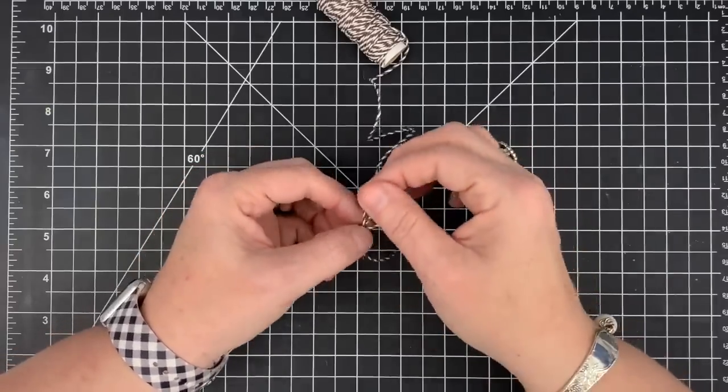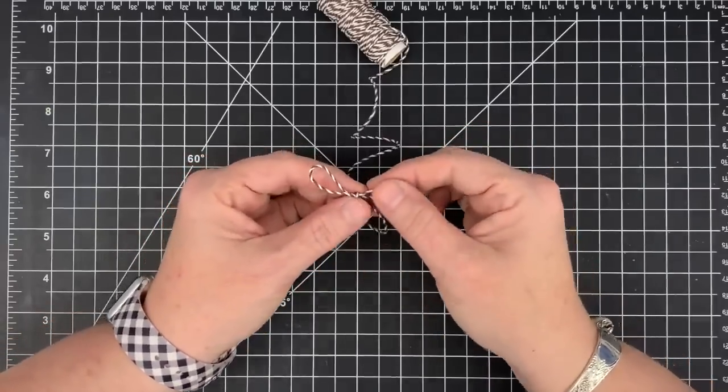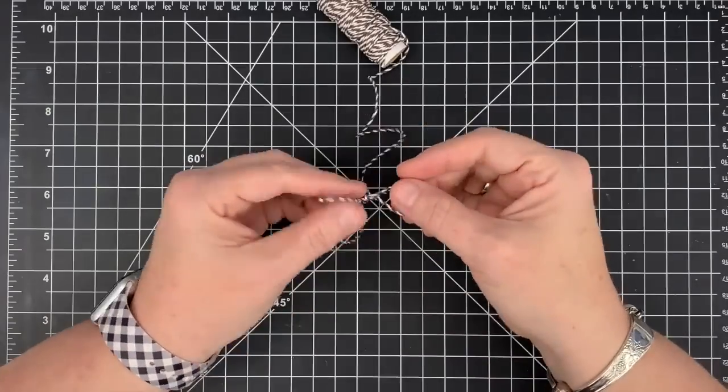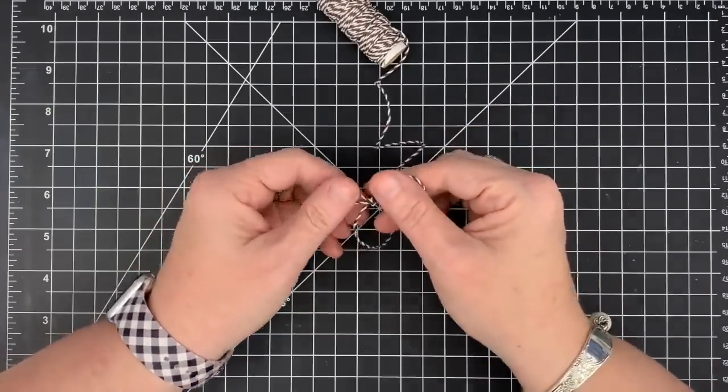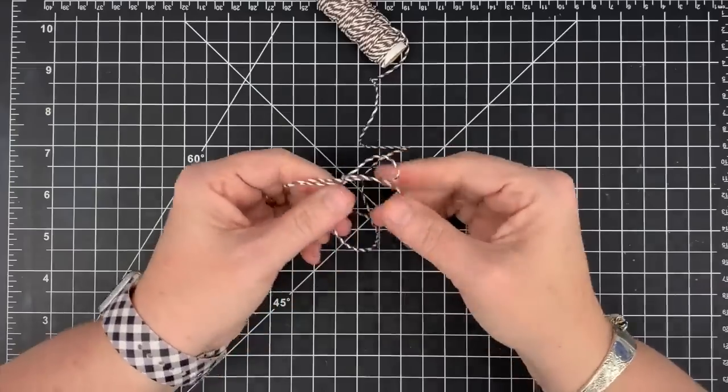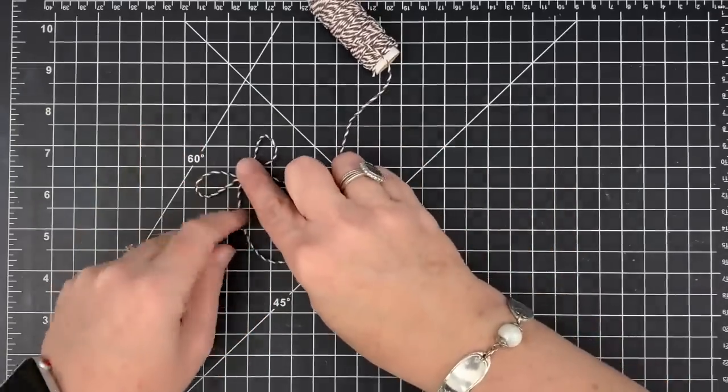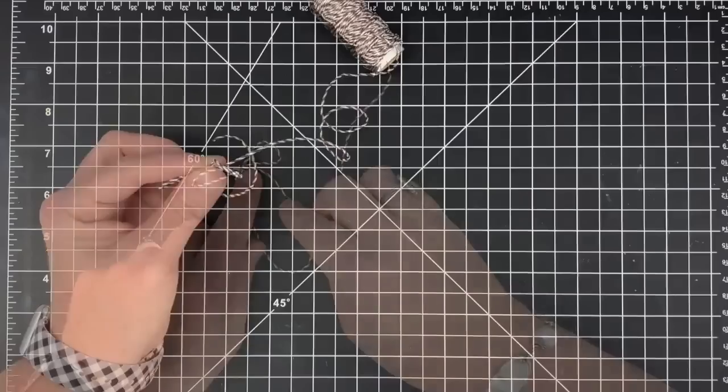If I leave it loose, I can adjust and make those loops where I want them to go. I'm going to show you the difference. This is the way to do it: keep that loop loose in the middle until you're where you want it, and then tighten it. See how my loops look? I've got these really nice open loops. I'm just going to snip it off.